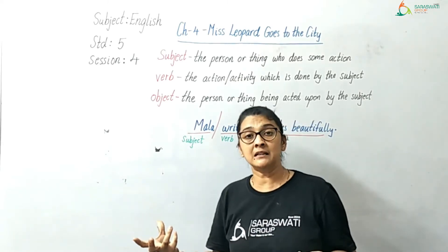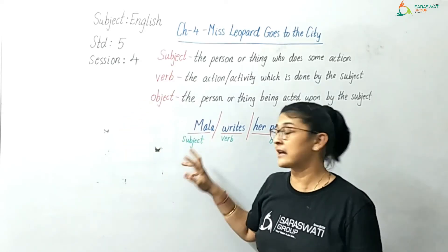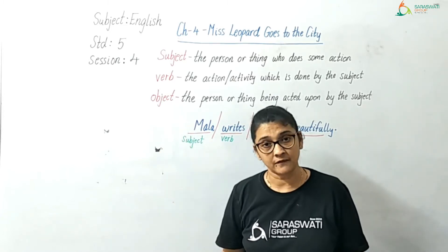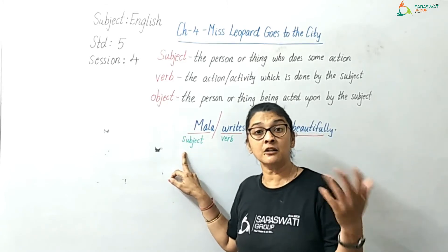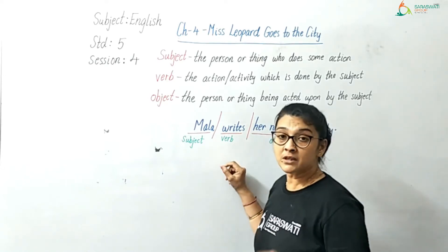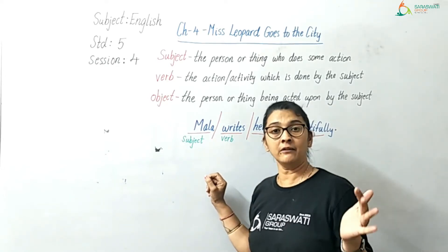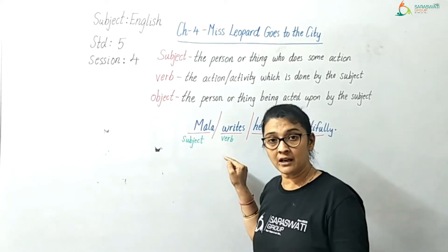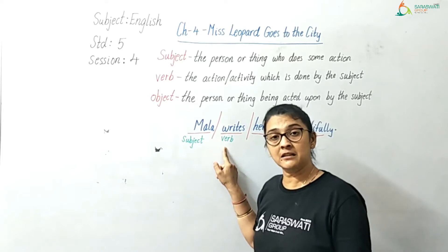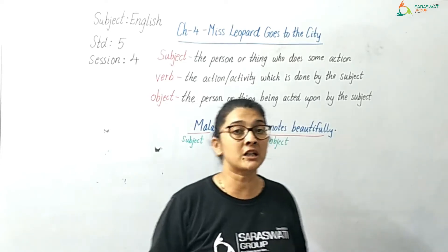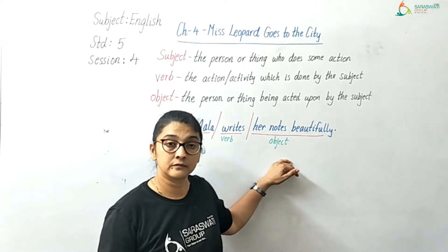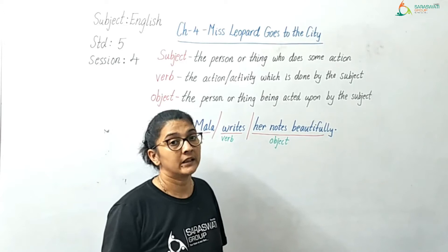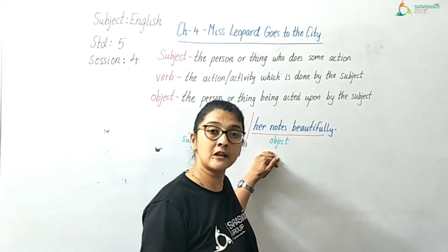If we want to separate the parts — subject, verb, object — we can do it this way. Mala: who is doing the action of writing? Mala. So Mala is the subject, because Mala is the doer of the action. Then comes the verb — the action. The activity done by Mala is 'writes.' So 'writes' is the verb, the action word. Mala is subject, 'writes' is the verb. And then comes the object: 'her notes.' Her notes is the object — Mala writes what? Her notes. So her notes is the object part of the sentence.